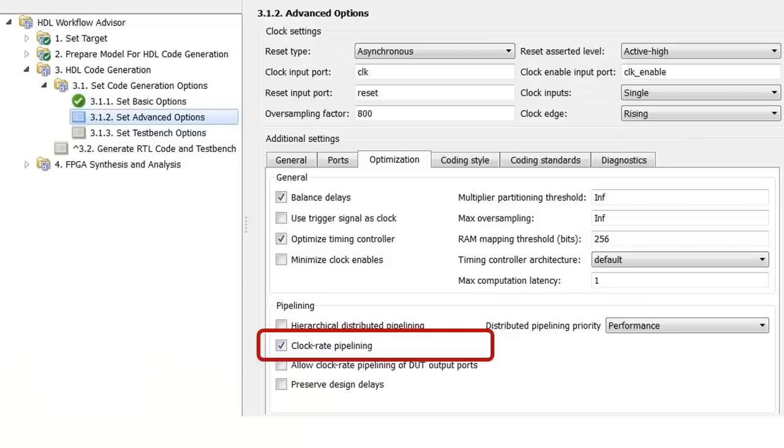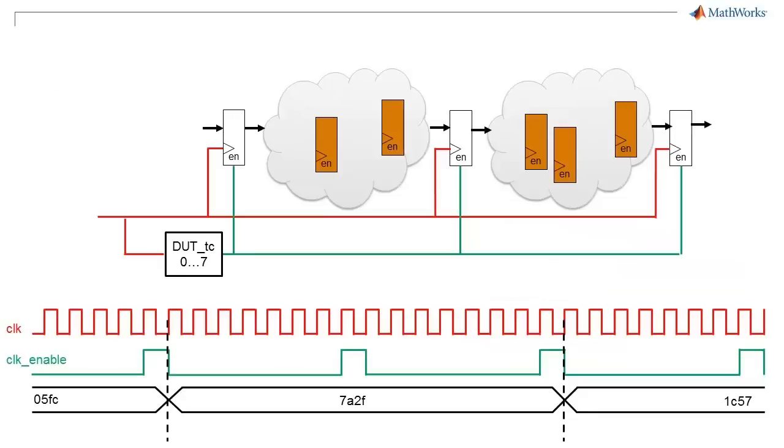So back to our global settings, and you can see this clock rate pipelining, which is selected by default to be turned on. This specifies that any inserted registers are connected to that fast clock rate.